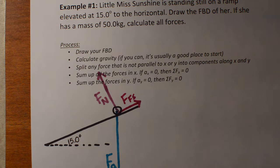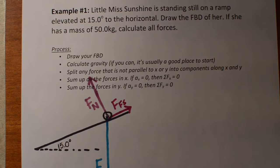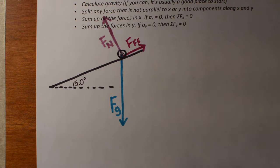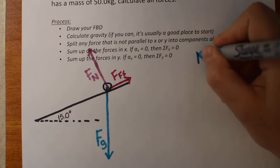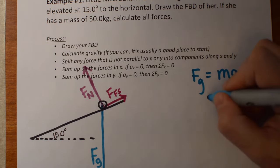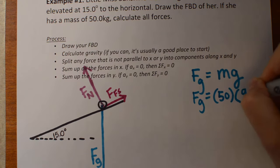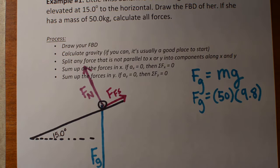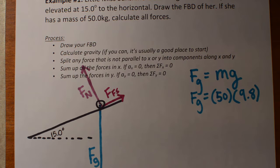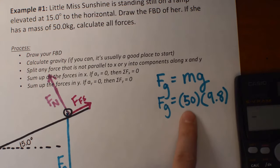Our job is to calculate all the forces she experiences. A good first move is to calculate gravity. On the surface of the earth, it's just mass times g. Don't get confused with kinematics — that's not negative 9.8. The sign of the force of gravity comes from your free body diagram, not from the sign of g. G is positive 9.8 here.